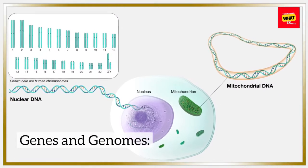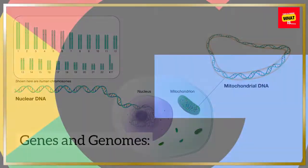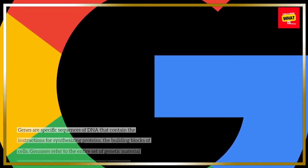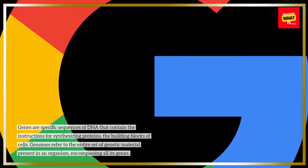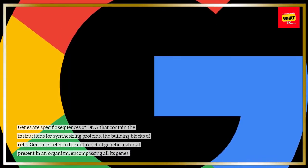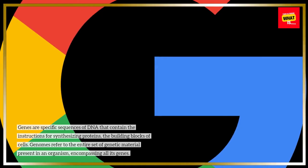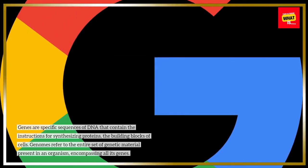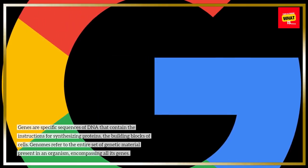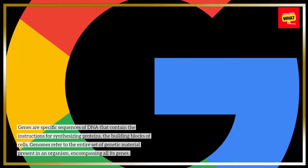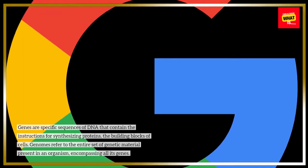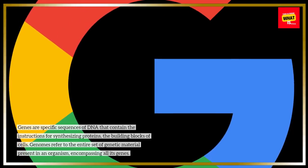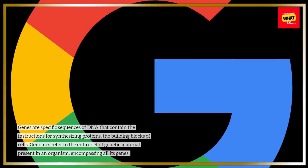Genes and genomes: genes are specific sequences of DNA that contain the instructions for synthesizing proteins, the building blocks of cells. Genomes refer to the entire set of genetic material present in an organism, encompassing all its genes.